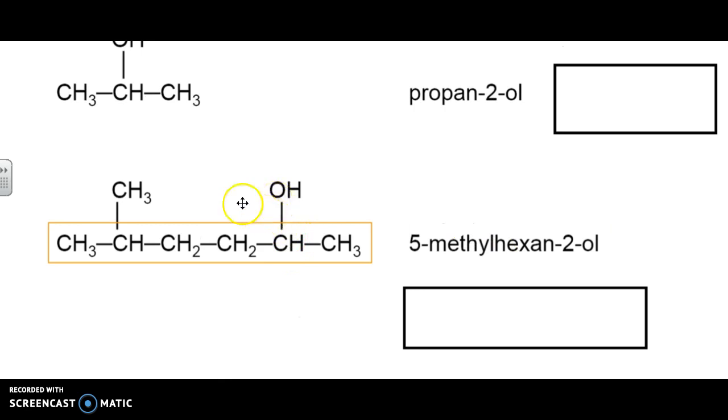In our last example here, we've got a methyl group at spot five. We have an alcohol at spot two. The alcohol is more important in terms of the numbering. So, therefore, we're going to number in this case right to left, which makes this alcohol spot two. It makes the methyl group spot five.